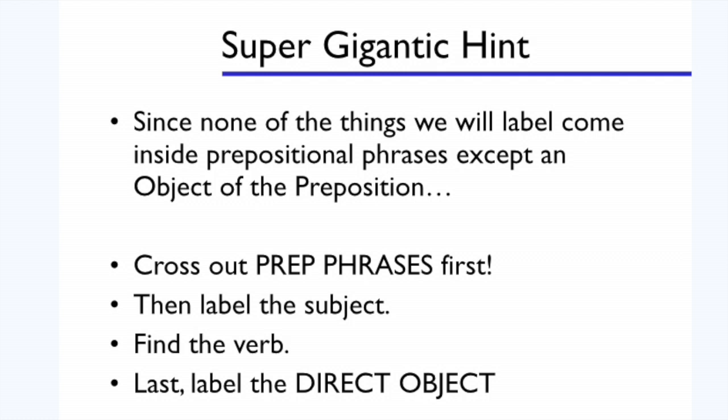And then lastly, find the direct object. If you follow these steps, you're a lot less likely to make a mistake, to label something inside a prepositional phrase as the direct object, or to mislabel the subject as the direct object. So follow these steps. And then when we add other pieces, like indirect objects, you'll see how important it is that you follow these correct steps every time.